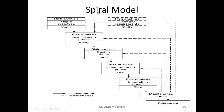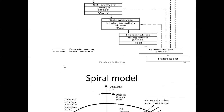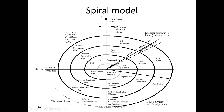To summarize: the spiral model is a combination of the rapid prototype model plus the waterfall model, plus the important addition of risk analysis. There are four quadrants in the spiral model, and different work is done in each quadrant.